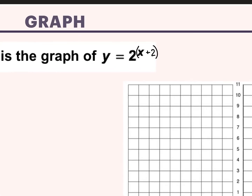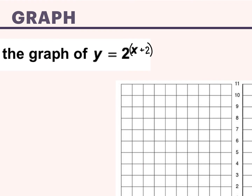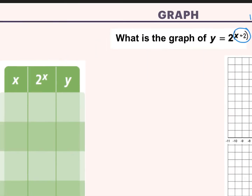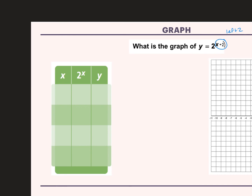All right, here I have plus 2 happening directly to the x. So what type of transformation is happening? It shifts to the left 2. But let's do the same thing — we're going to plot points. Good numbers to plug in are negative 1, 0, 1, and 2. These will always be good numbers.